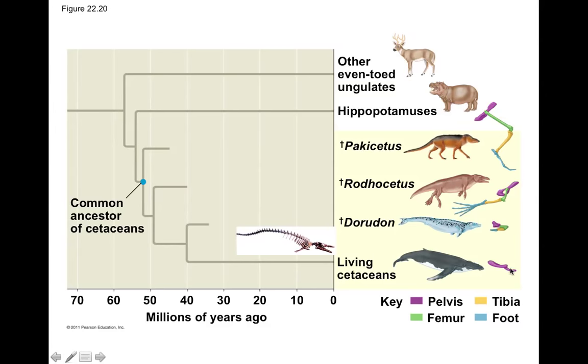Basilosaurus fits in somewhere in the range between Dorudon and our modern living cetaceans, which have a very reduced pelvic girdle — essentially a vestige. But why do they still have it? Because it hasn't totally gone away.